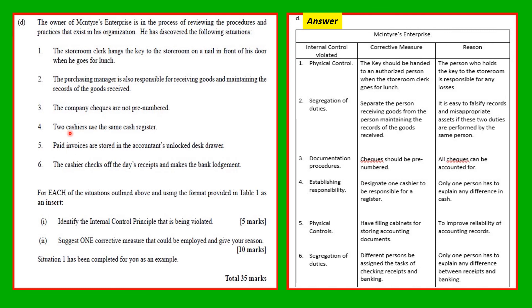Situation four: two cashiers use the same cash register. The control violated is establishment of responsibility. We should designate one cashier to be responsible for a cash register, so that only one person has to explain any difference in cash.